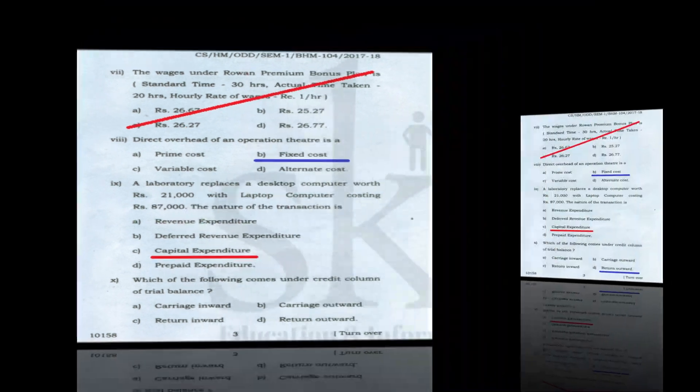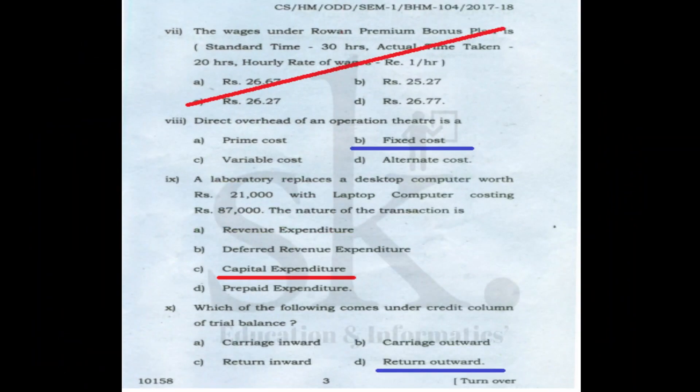Question number ten: which of the following comes under the credit column of a trial balance — carriage inward, carriage outward, and return inward are all debit side items. Return outward is a purchase return and should be on the credit side. The correct option is D.